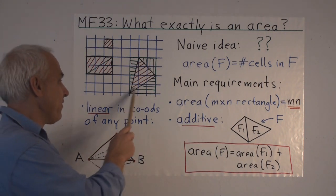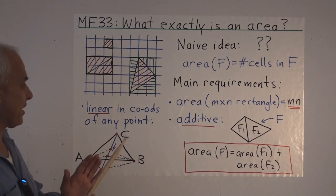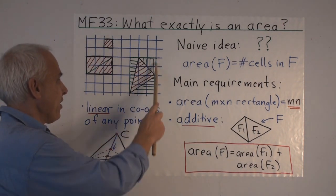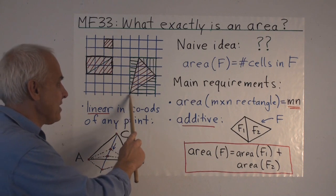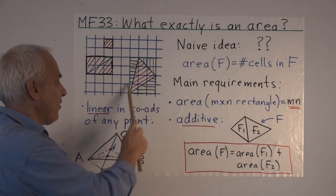And we can get the area of a general triangle, for example this one, by judicious cutting and pasting. The area of this rectangle, then subtract the area of this triangle, this triangle and this triangle.